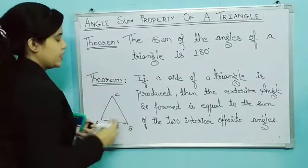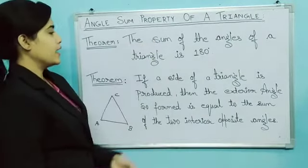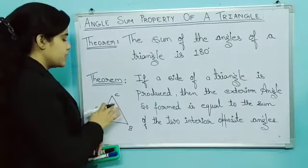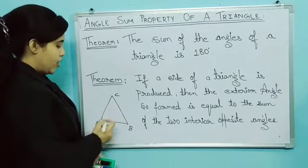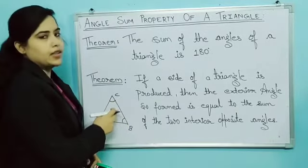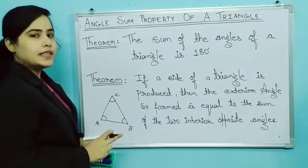The first theorem states that the sum of the angles of a triangle is 180 degrees. So when we talk about any triangle and each angle, the sum is 180 degrees. So this is our first theorem.